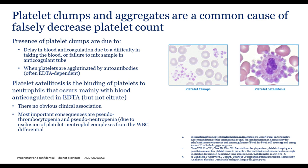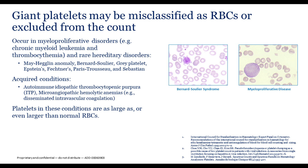Platelet clumps and aggregates are a common cause of falsely decreased platelet counts, as visible on smear review. Platelet satellitosis — platelets surrounding white cells — would also decrease the platelet count. Giant platelets may be misclassified as RBCs or excluded from the count entirely. They occur primarily in myeloproliferative disorders such as chronic myeloid leukemia, as well as acquired conditions like autoimmune idiopathic thrombocytopenic purpura and microangiopathic hemolytic anemias. Platelets in these conditions can be as large as or larger than normal red cells, causing overlap between the platelet and red cell populations in most automated systems.